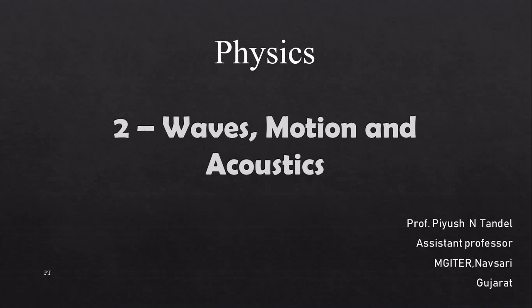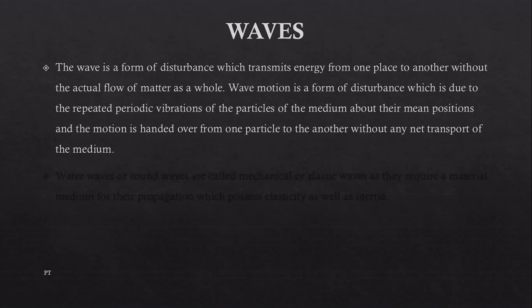Now let's start with some basic fundamentals of waves. The wave is a form of disturbance which transmits energy from one place to another without the actual flow of matter as a whole. Wave motion is a form of disturbance which is due to repeated periodic vibrations of particles of a medium about their mean position, and the motion is handed over from one particle to another without any net transport of the medium.